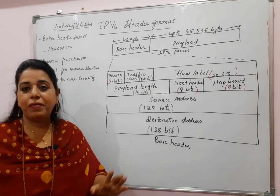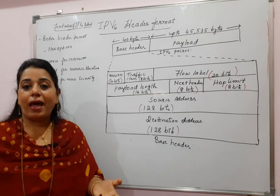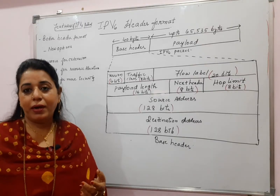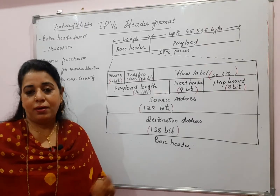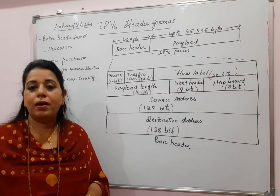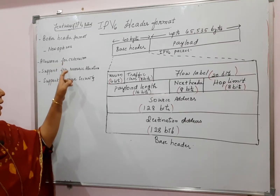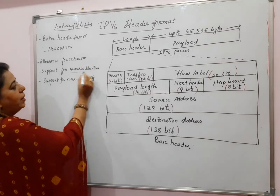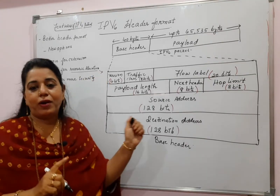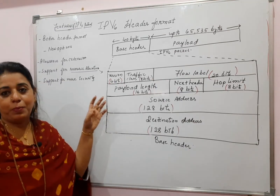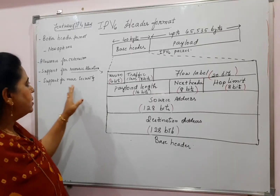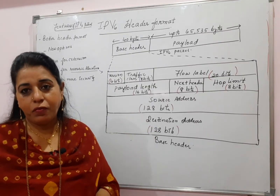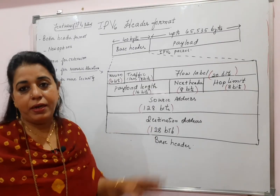There is allowance for extension — IPv6 is designed to give flexibility to expand in future depending on newer technology. Support for resource allocation is also there, which you can understand through the flow label field of IPv6. Support for more security is included — authentication and encrypted form of messages — these two were not there in IPv4 but are included in IPv6.